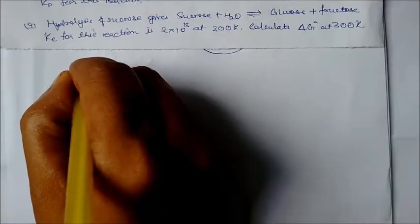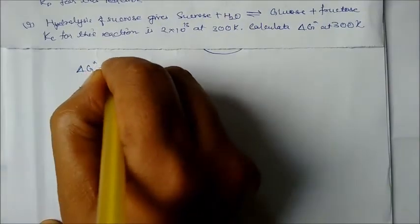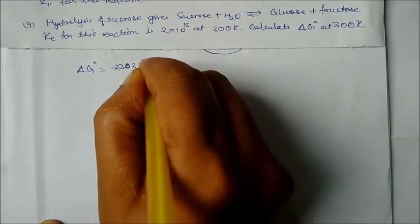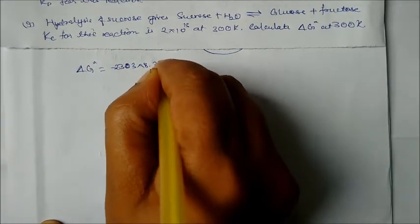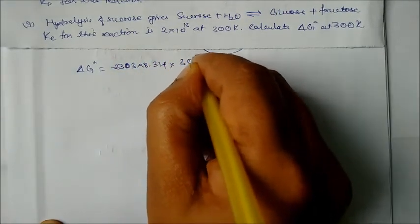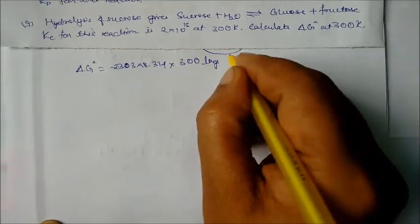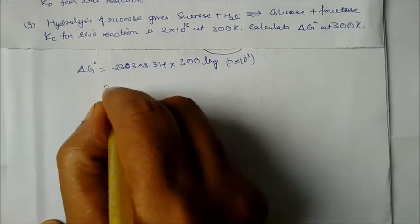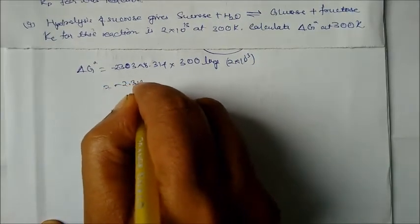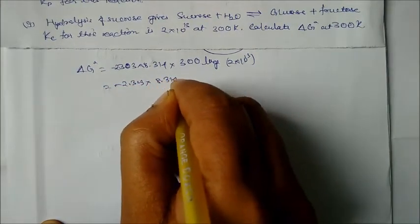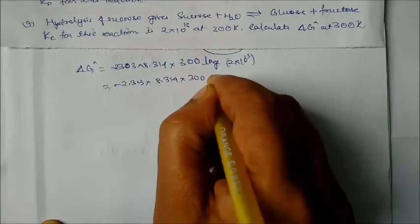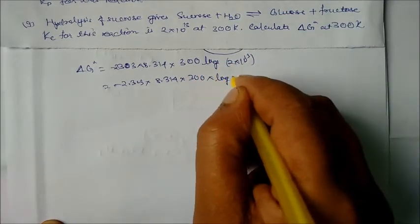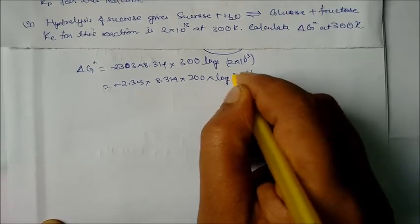Using ΔG° = −2.303 × 8.314 × 300 × log(2 × 10²⁰). We directly substitute the Kc value into the formula and solve.